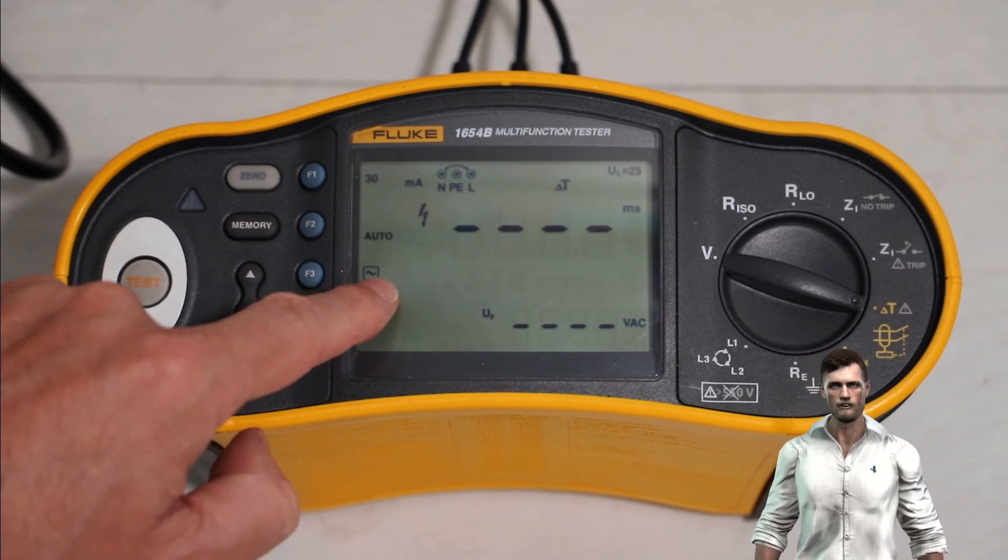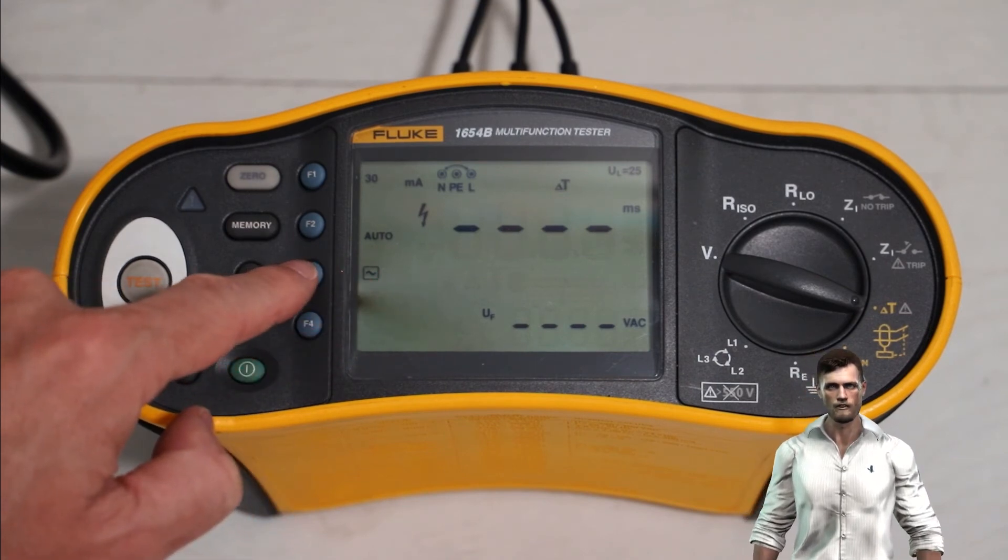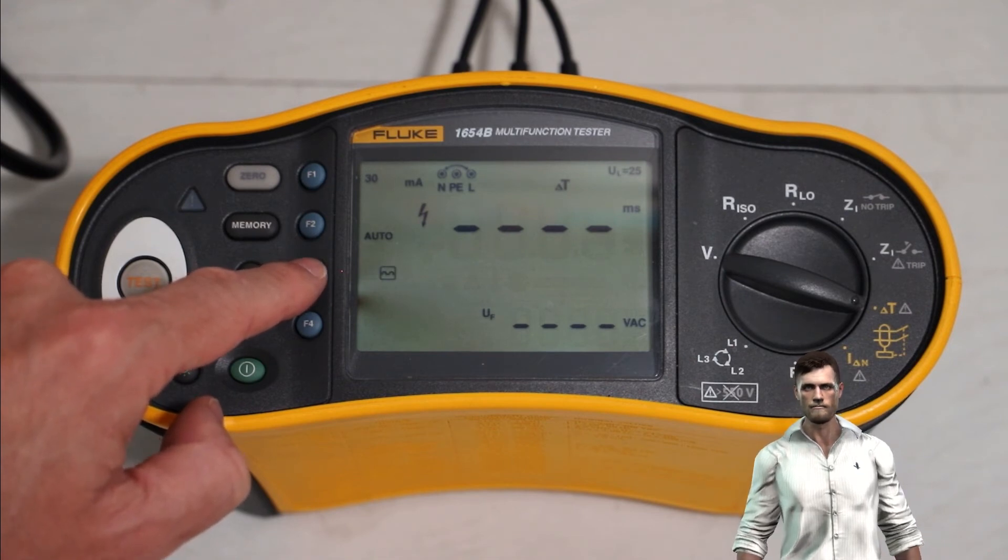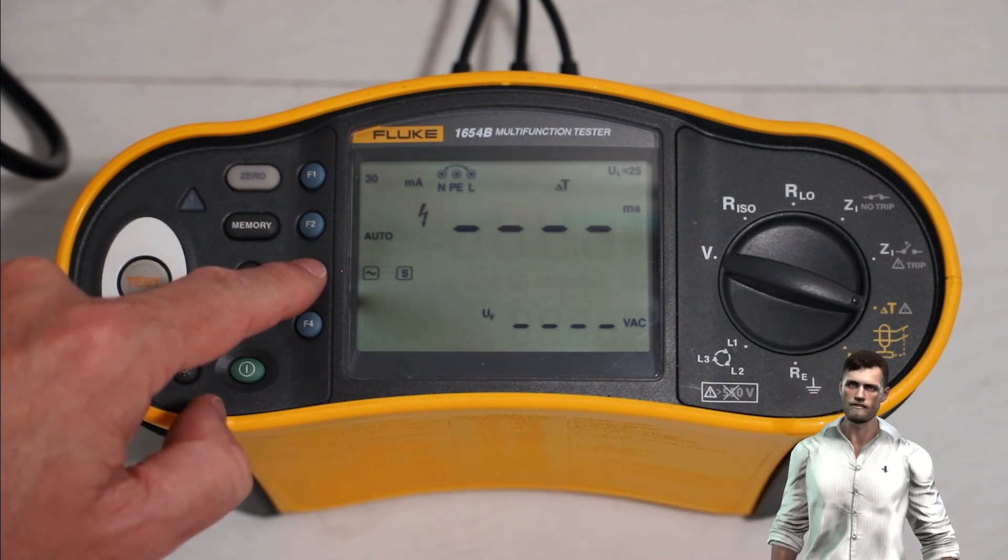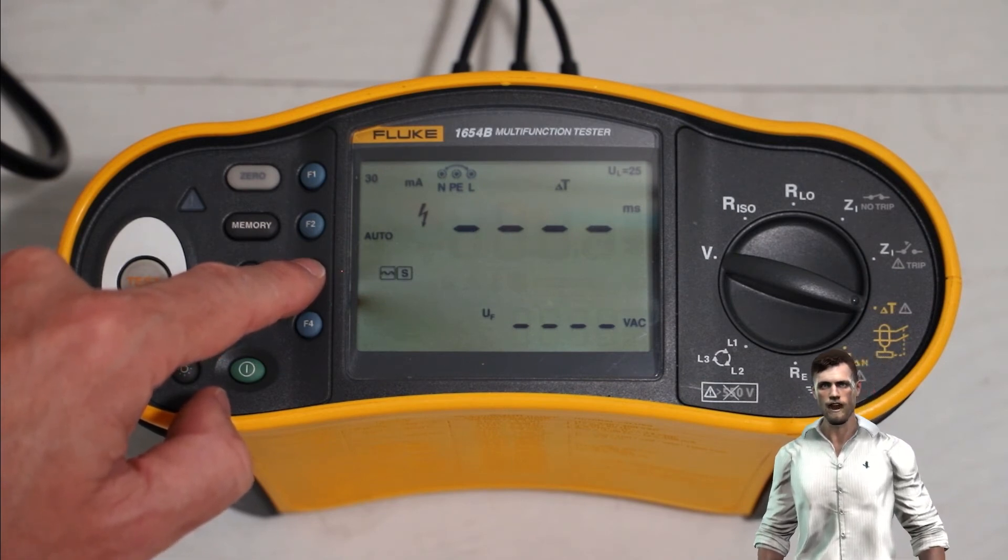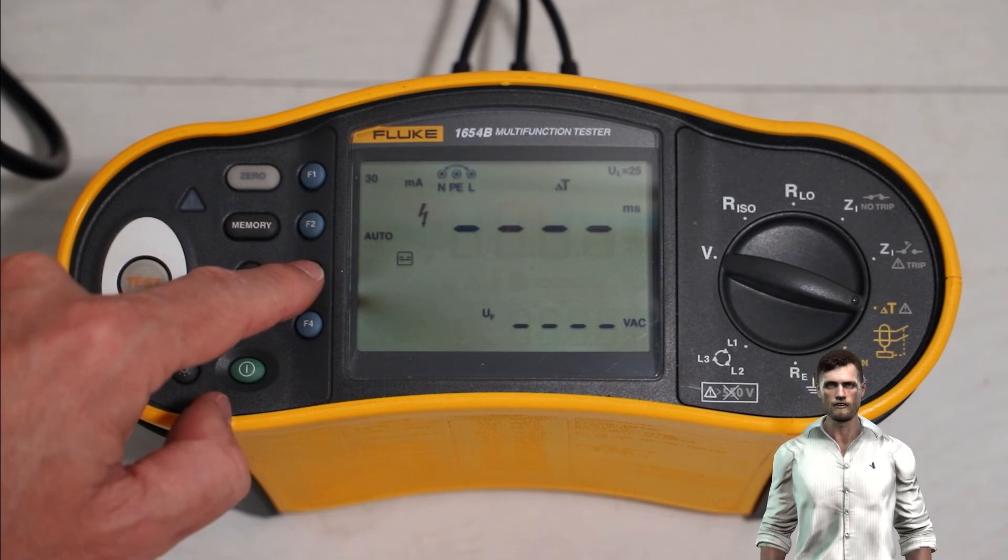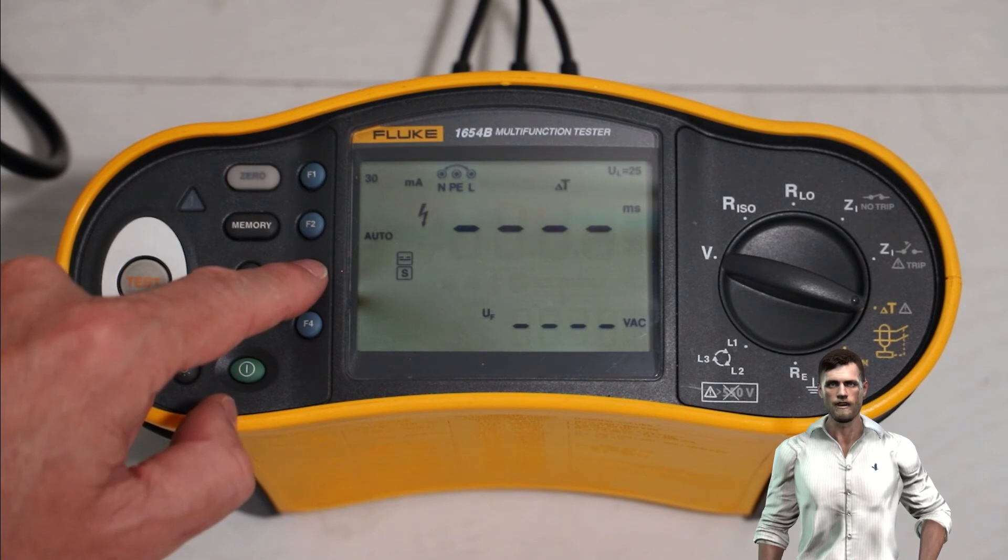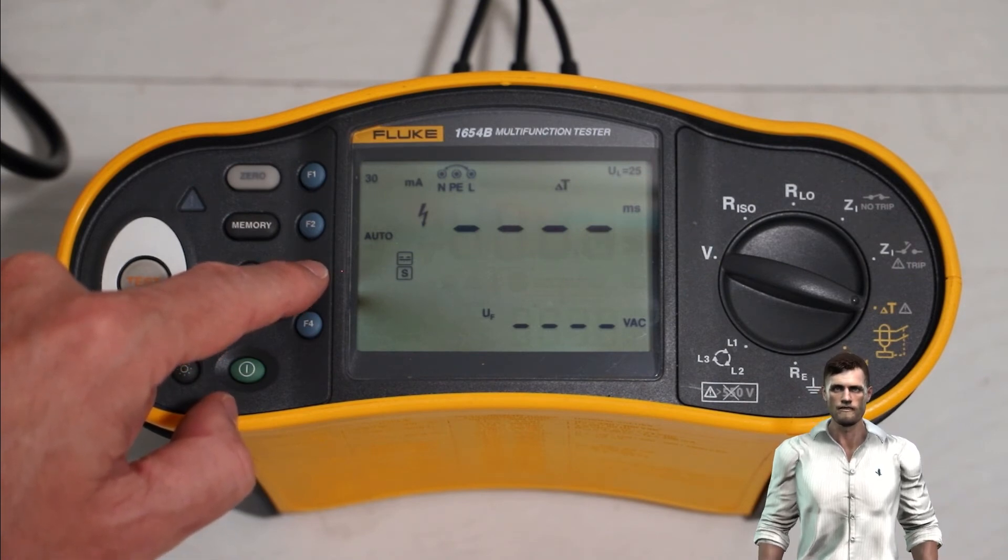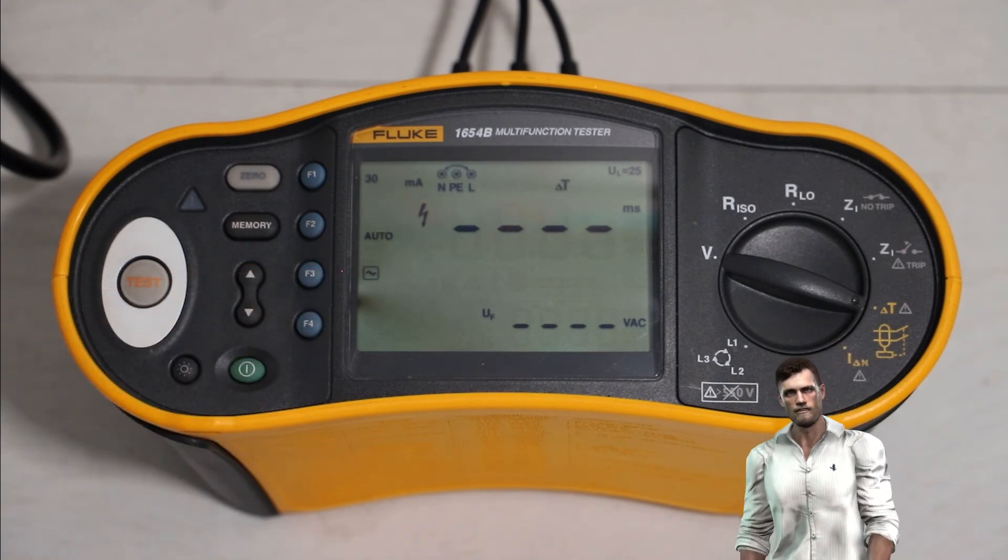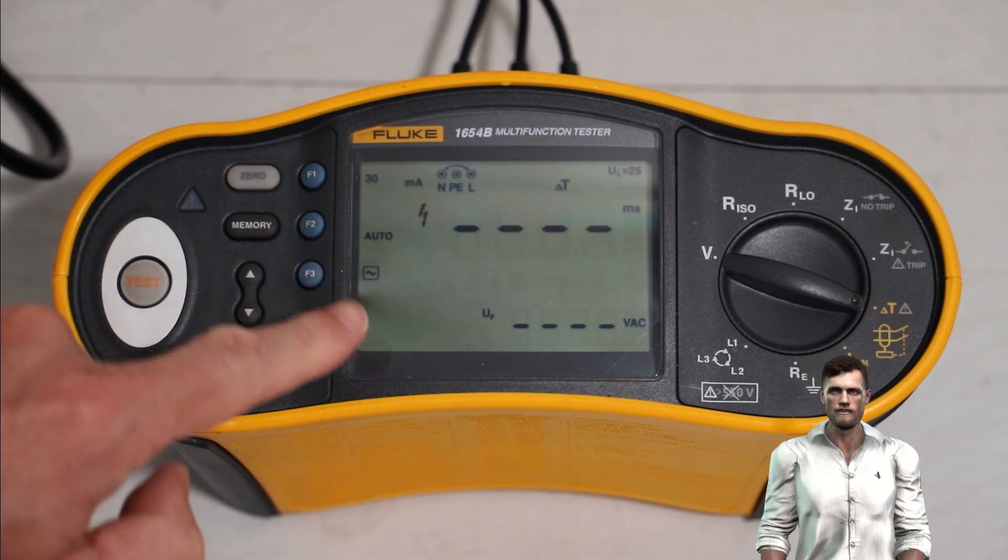With the F3 key, we can select the type of differential that we want to test, for example type AC, represented by a sine wave, type A, represented by a rectified wave, type AC with delay, represented by the sine wave with the letter S, type A with delay, represented by the rectified wave plus the letter S, type B, represented by the symbol of direct voltage and finally type B with delay, represented by the symbol of direct voltage plus the letter S. In my case, as I am going to test a type AC differential protection, I will select the alternating voltage symbol.